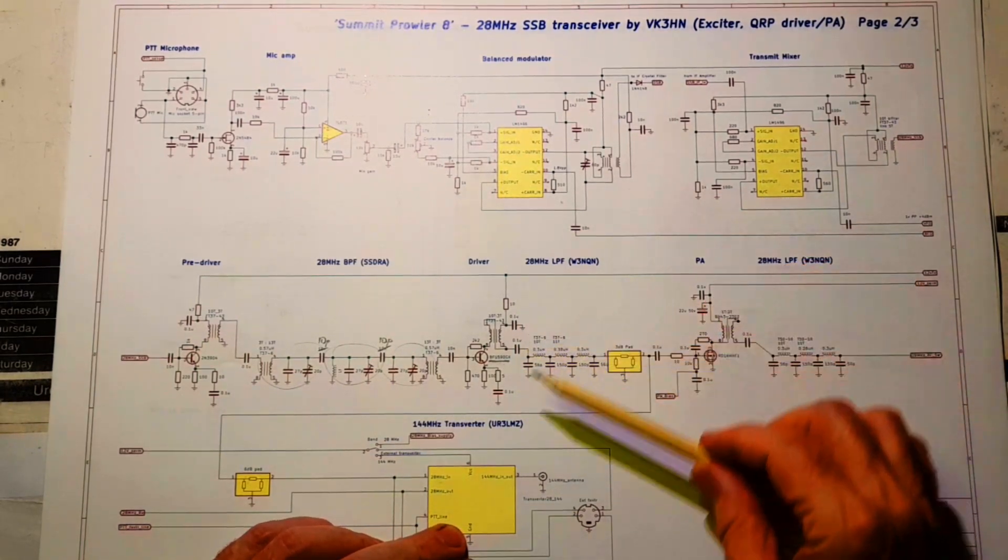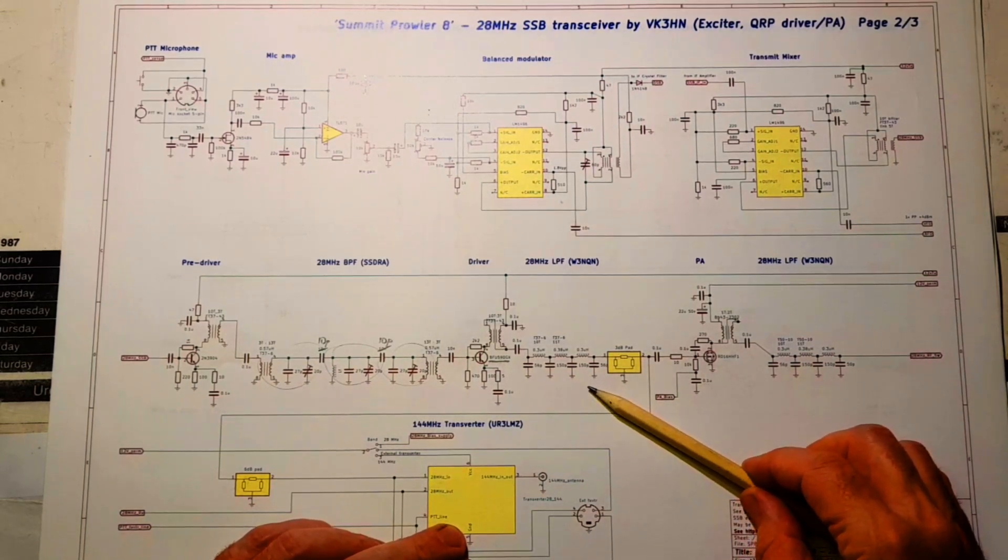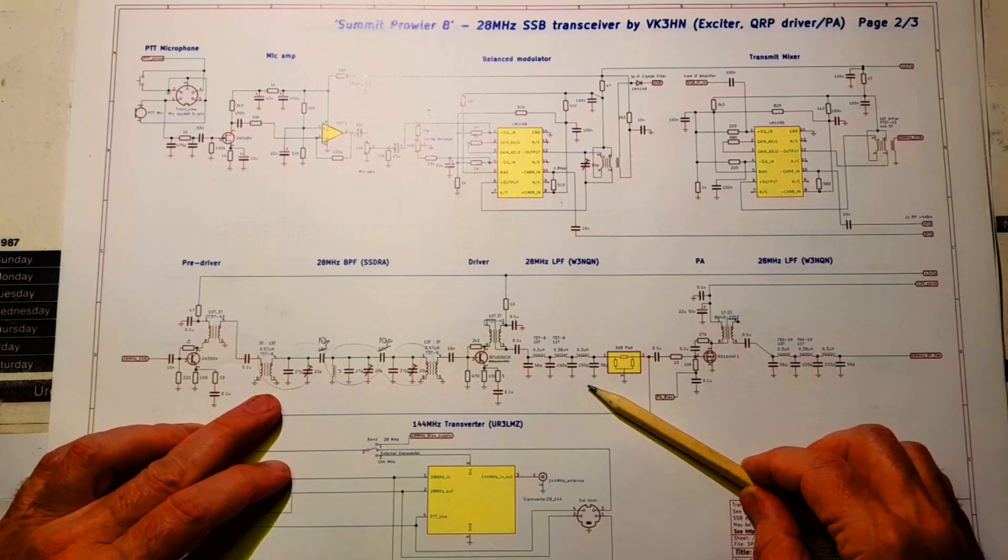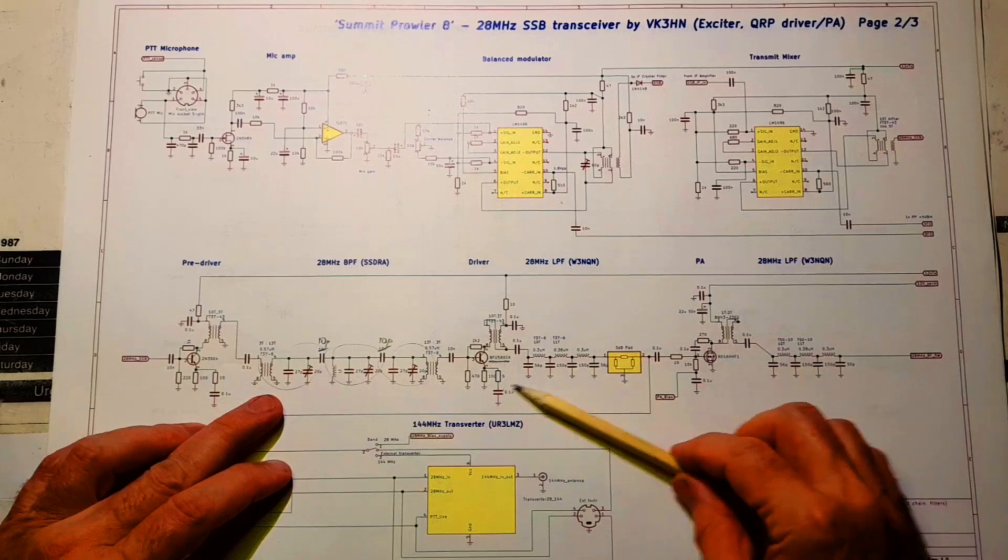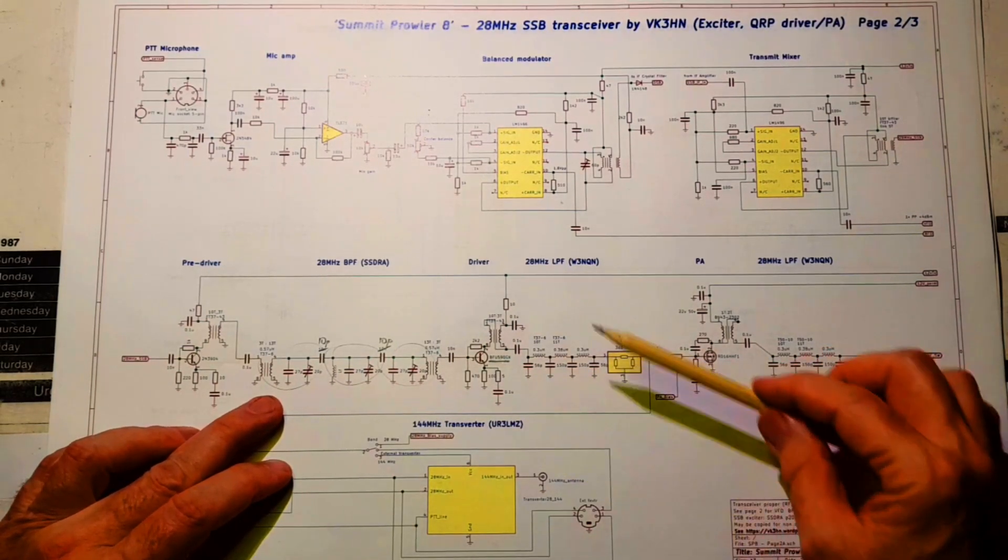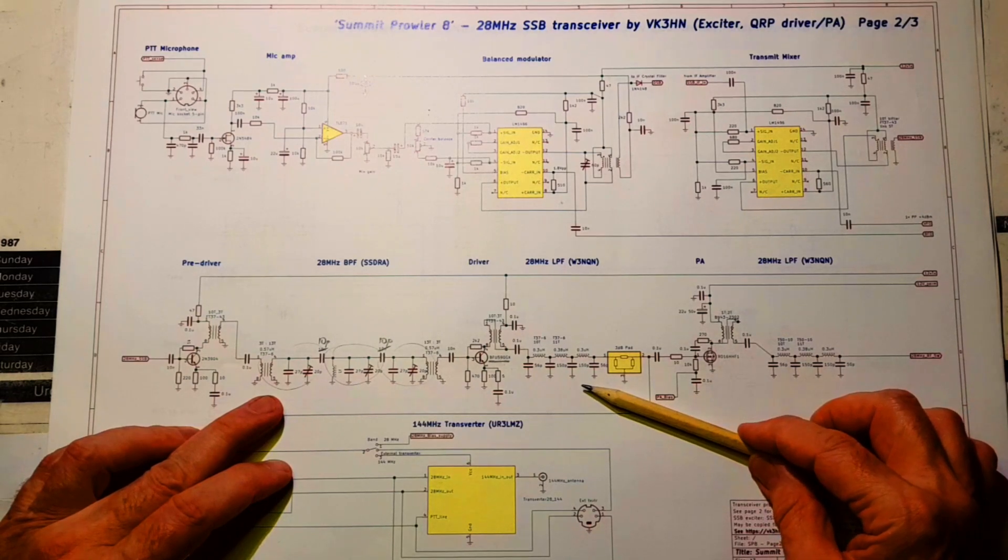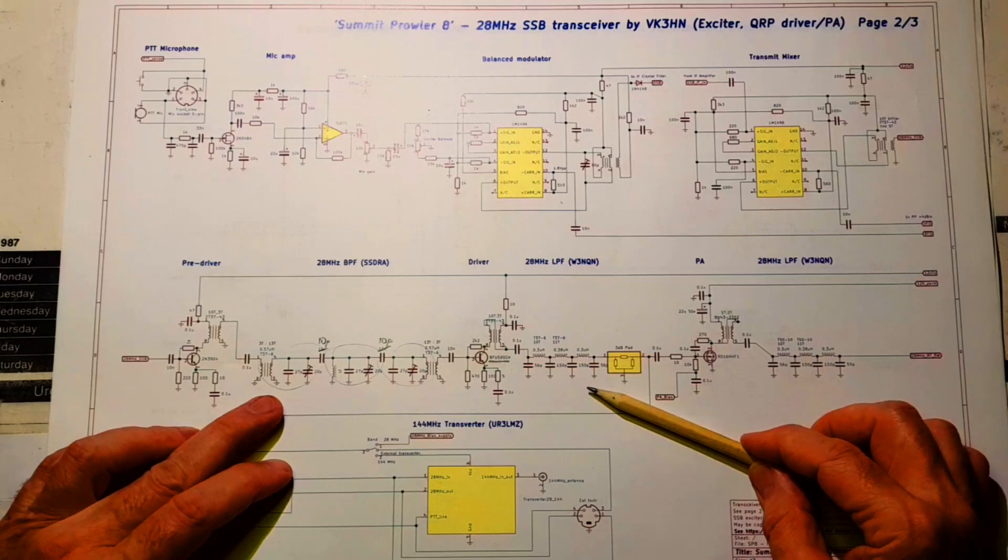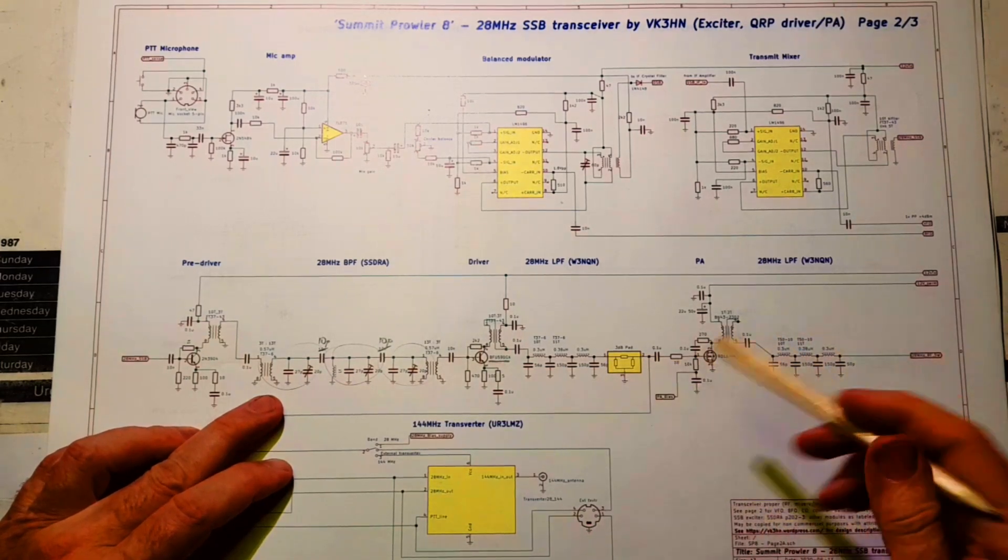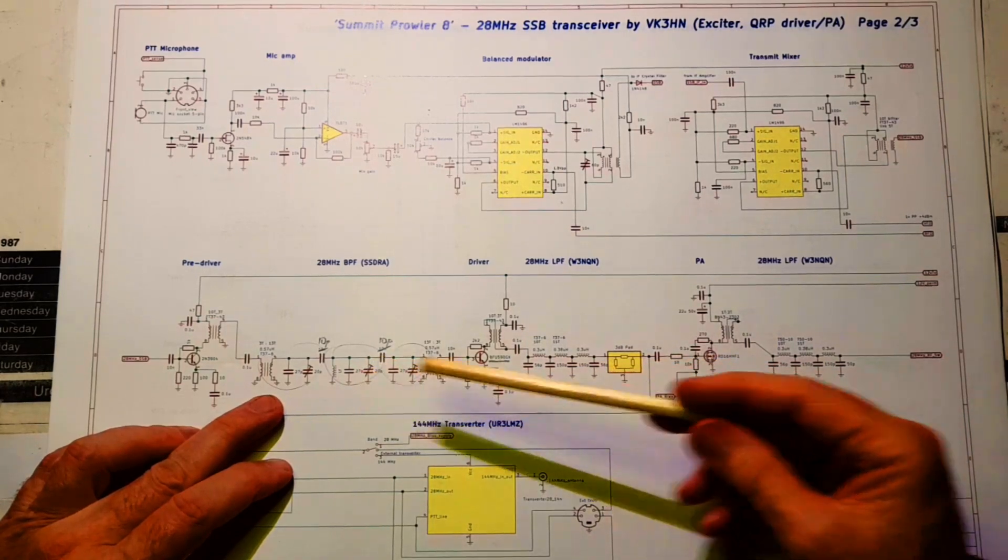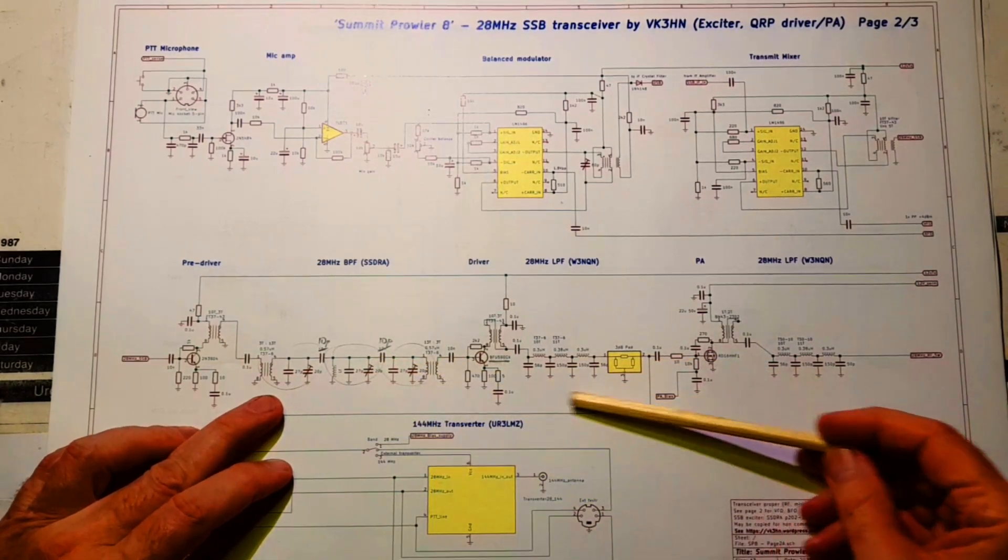Through another low-pass filter, and this is the advantage of building a monobander. Because you're stuck in one band, you can filter as much and as stringently as you like. If this was a multiband rig, every time you were filtering, you'd need to work out a band switching arrangement. But when you're building a monobander, you're freed up of band switching. So it was really tempting to kind of load this design up with strong filtering.